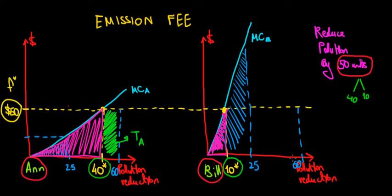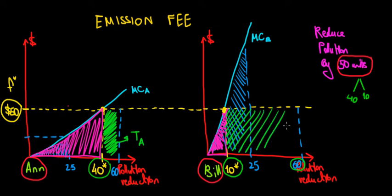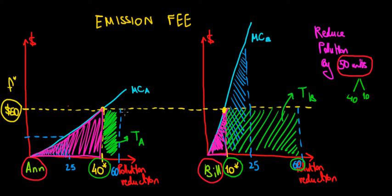Bill will produce the remaining 50 units of pollution — out of the 60 total units he is able to produce, he reduces 10 units, meaning the remaining 50 are going to be polluted, so this is the tax that Bill incurs, and we can see it is much more than N's. So even though N has a higher cost of actual pollution reduction, she has a lower tax. For Bill, the story goes differently: he has a lower cost of reducing pollution but a higher tax. At the end of the day, they both achieve efficiency because they allocate resources when the emission fee equals the marginal cost for each of them.